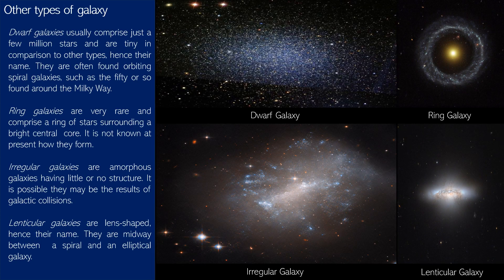Apart from the main Hubble classifications, there are other galaxy types. Dwarf galaxies usually comprise just a few million stars and are tiny in comparison — around 50 are found orbiting the Milky Way. Ring galaxies are very rare, comprising a ring of stars surrounding a bright central core; how they form is not yet known. Irregular galaxies are amorphous, with little or no structure, possibly the result of galactic collisions. Lenticular galaxies are lens-shaped, midway between a spiral and an elliptical.